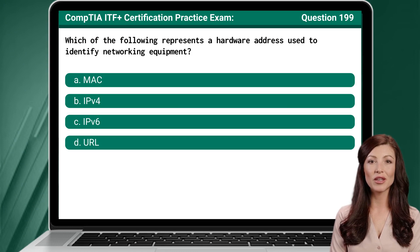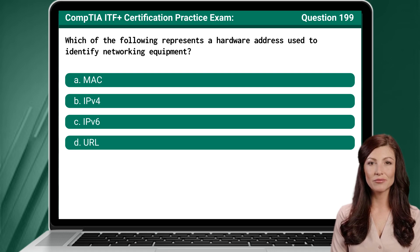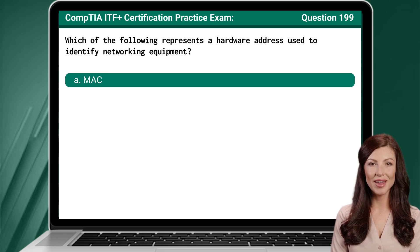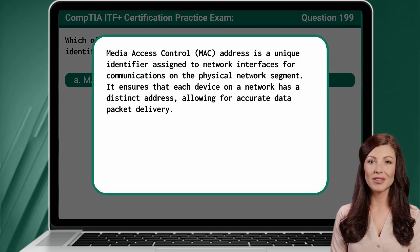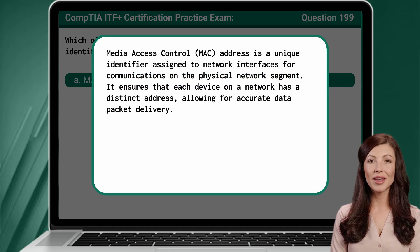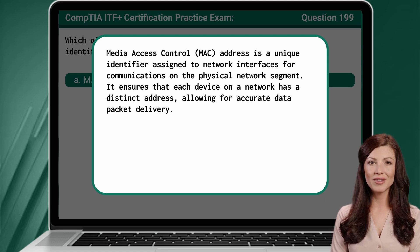Question 199. Which of the following represents a hardware address used to identify networking equipment? The answer is A: MAC. Media Access Control, or MAC, address is a unique identifier assigned to network interfaces for communications on the physical network segment. It ensures that each device on a network has a distinct address, allowing for accurate data packet delivery.